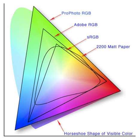A color space may be arbitrary, with particular colors assigned to a set of physical color swatches and corresponding assigned color names or numbers, such as with the Pantone collection, or structured mathematically as with the NCS system, Adobe RGB, and sRGB.